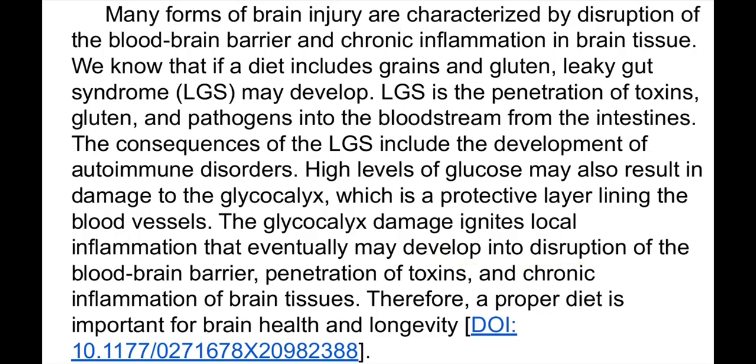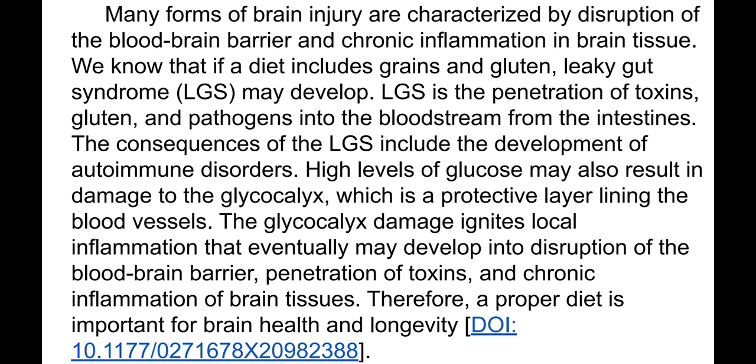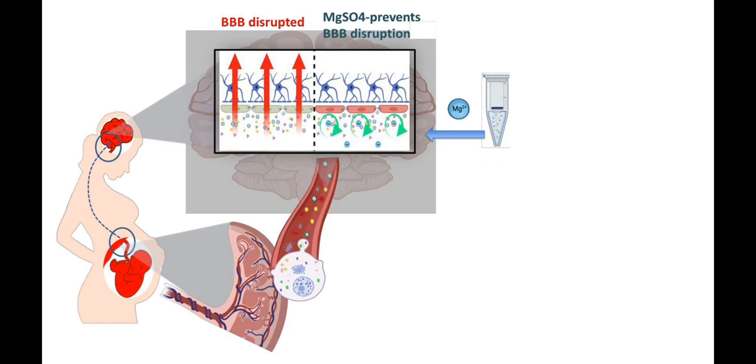Many forms of brain injury are characterized by disruption of the blood-brain barrier and chronic inflammation in brain tissue. If a diet includes grains and gluten, leaky gut syndrome may develop — meaning toxins, gluten, and pathogens penetrate into the bloodstream from the intestines. High levels of glucose may also damage the glycocalyx, a protective layer in blood vessels; this damage ignites local inflammation that can eventually disrupt the blood-brain barrier, allowing penetration of toxins and causing chronic brain inflammation. Therefore, a proper diet is important for brain health and longevity.